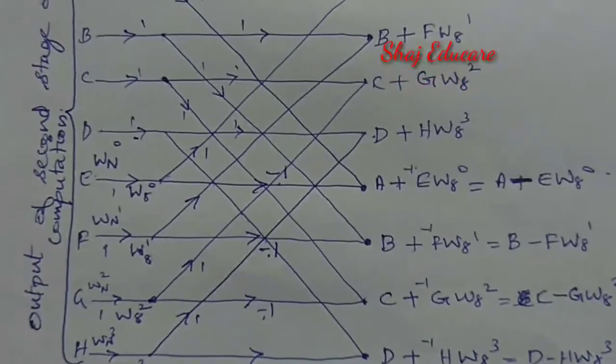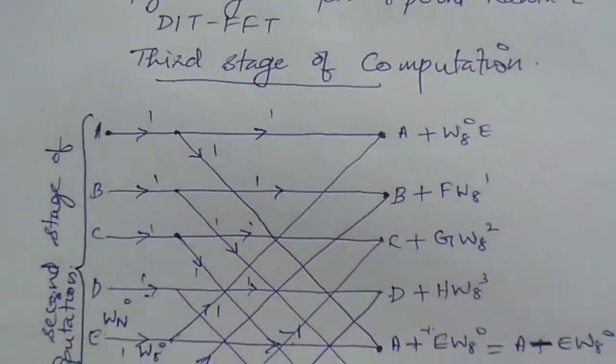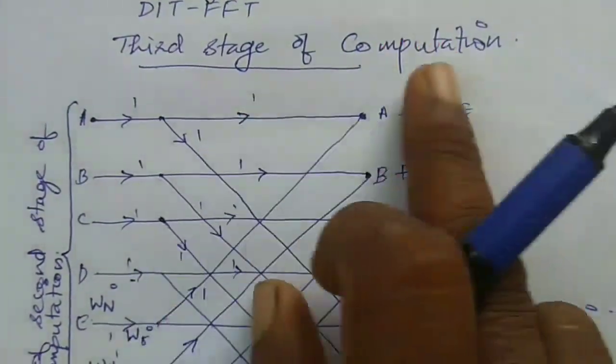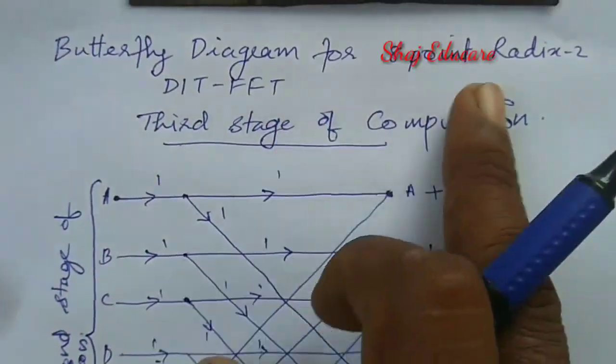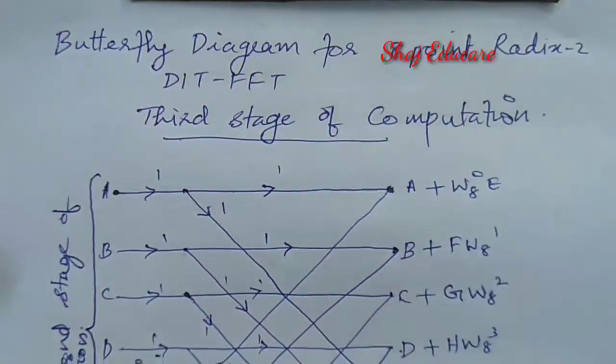That is all about the third stage of computation — the 8-point DIT FFT radix-2 method. Thank you.